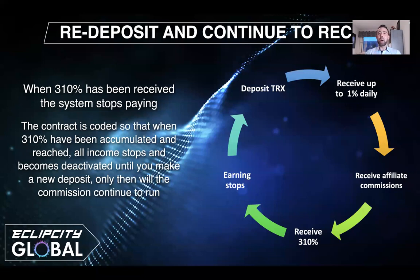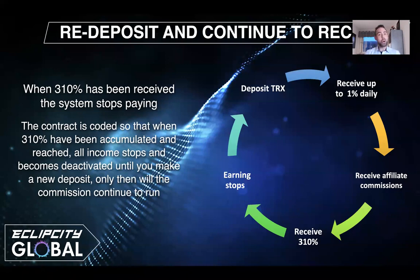All income stops and becomes deactivated until you make a new deposit. It's a simple cycle: you deposit TRX to contribute to the fund, you receive up to 1% daily, you can also receive affiliate commissions for helping the community grow, and you will receive 310%. When that's reached, earnings stop. You make a new deposit to activate a new 310% limit, continue to receive up to 1% daily, and the cycle repeats.